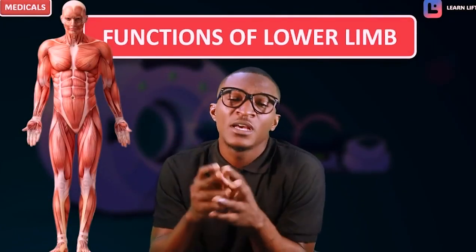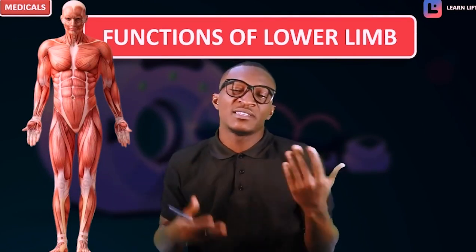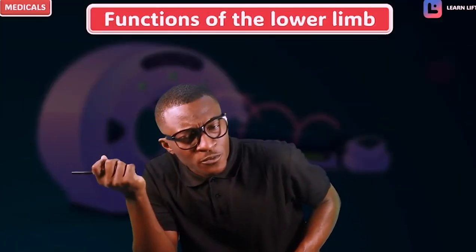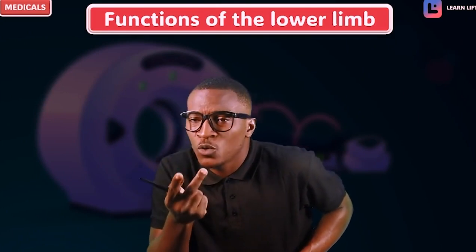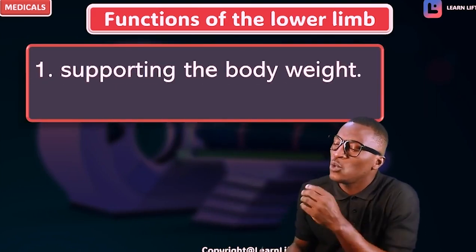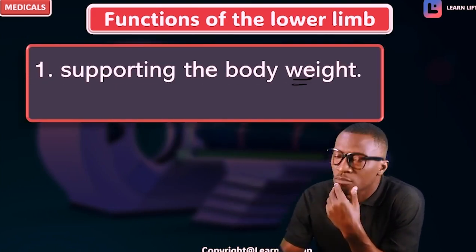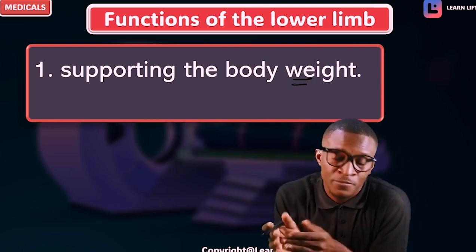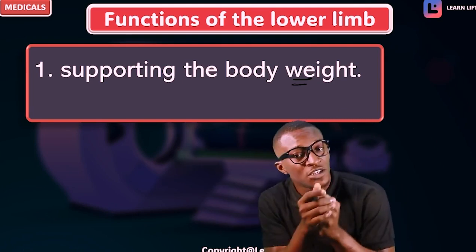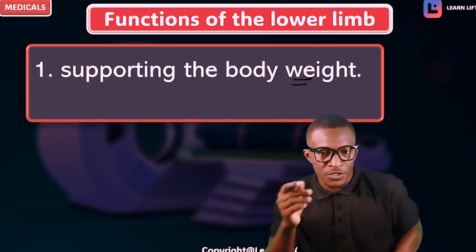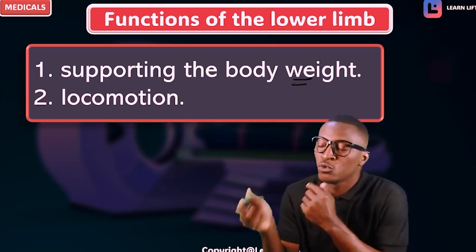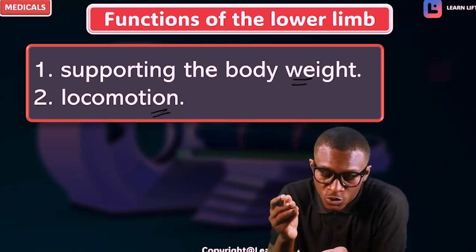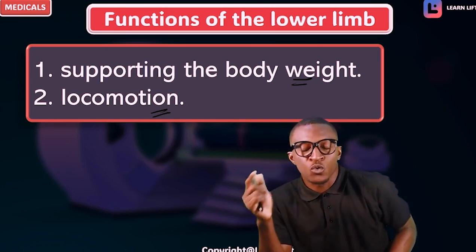Hello guys, in this class let's talk about the functions of the lower limb as well as how weight is transmitted in the lower limb. There are two major functions of the lower limb. Number one, the lower limb helps to support the body weight. Number two, the lower limb helps forward for locomotion — you can move from one place to another because of the lower limb.